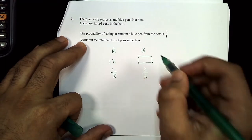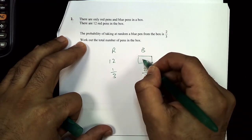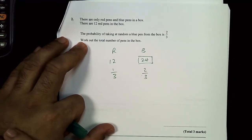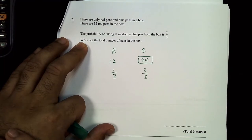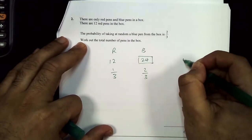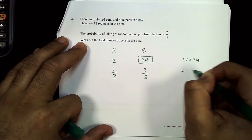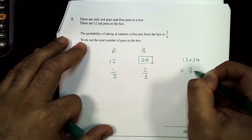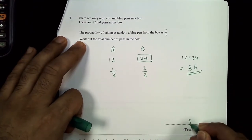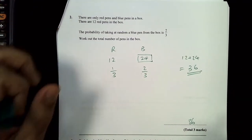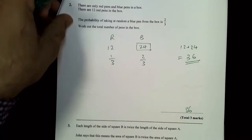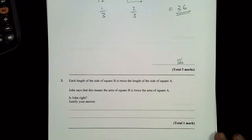So 12 represents one-third. To turn one-third into two-thirds I multiply by 2, so 12 × 2 = 24 blue pens. Total number of pens = 12 + 24 = 36.